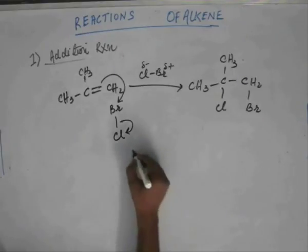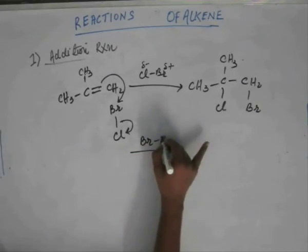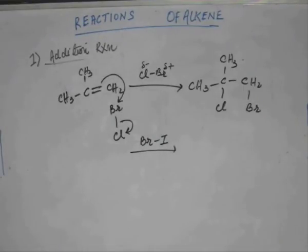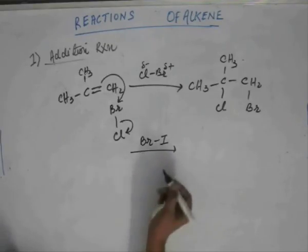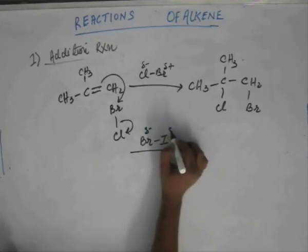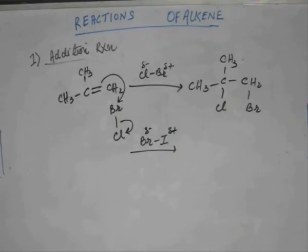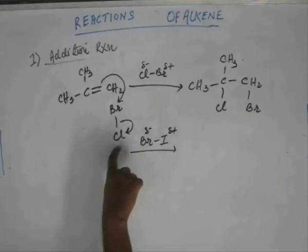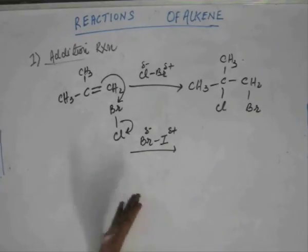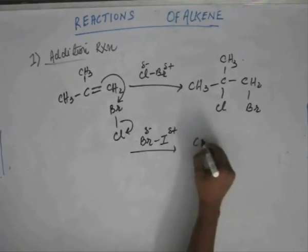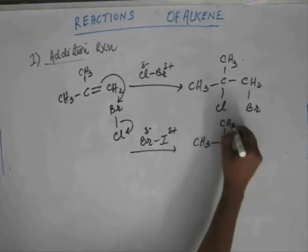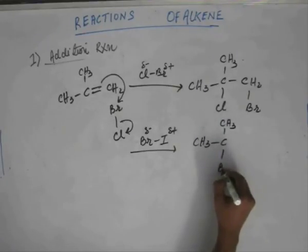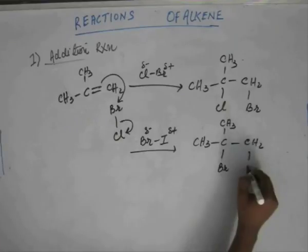We can also have iodobromide (IBr). This is not bromoiodide because bromine's electronegativity is higher than iodine's. So bromine develops negative charge and iodine develops positive charge — the positive half is iodine. If we add iodobromide, iodine is the one that adds on the outer carbon and bromine is added on the inner carbon.